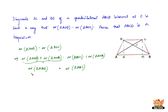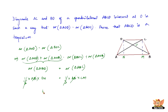Now, area of triangle ABD equals half times base AB times height DN, and area of triangle ABC equals half times base AB times height CM. Cancelling half and AB from both sides, we get DN equal to CM. That is why we drew the perpendiculars — just to get the heights.